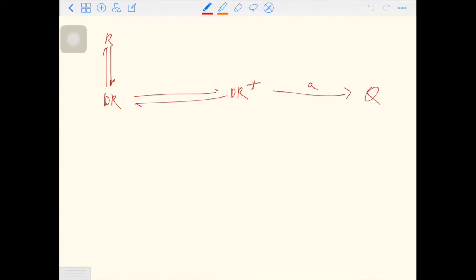There is one inactive form, DR, and active form, DR star. And there is an equilibrium between them, and only DR star will generate the response.